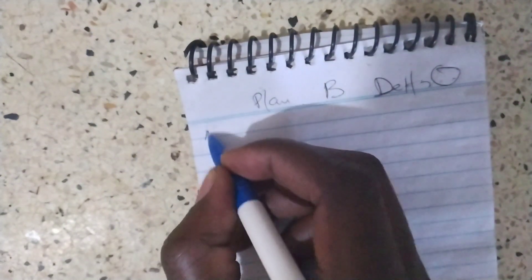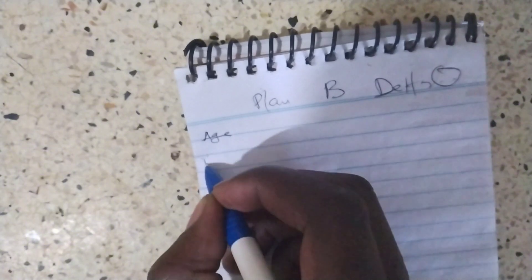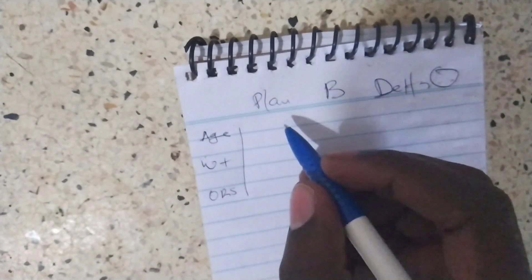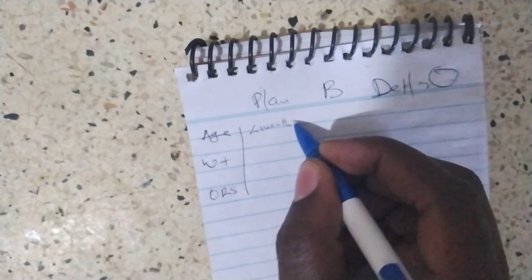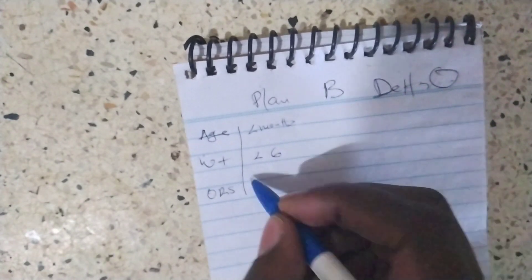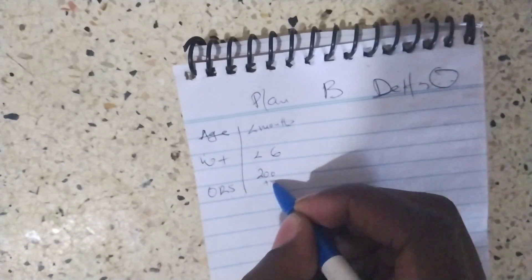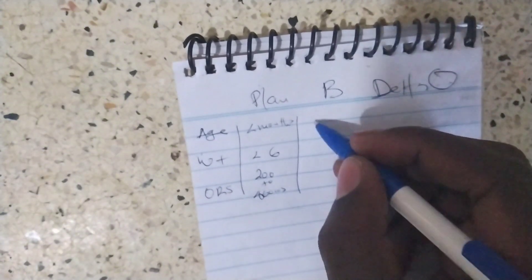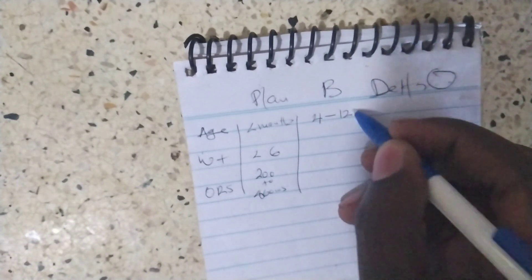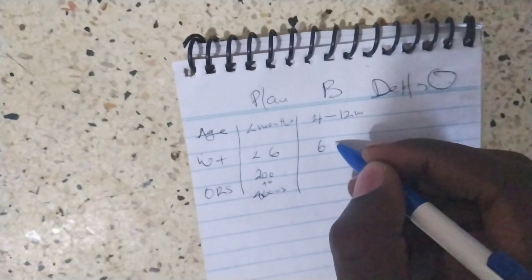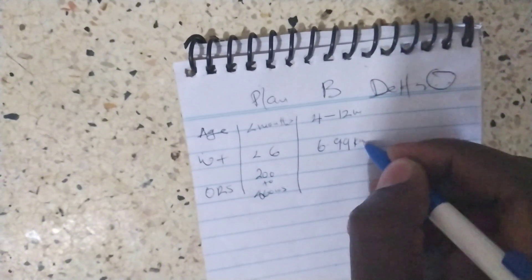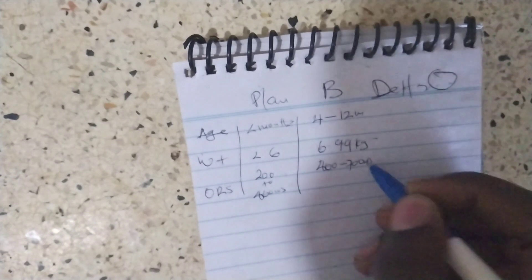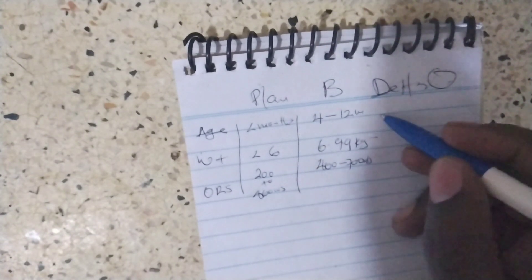We are going to first put it in the graph, the weight and then the meals of ORS which we are going to give. If the child is less than four months and the weight is less than six, we give 200 to 400 meals of ORS. If the baby is four months to twelve months and the weight is six to nine point nine kilograms, we give 400 to 700 meals in the first four hours.